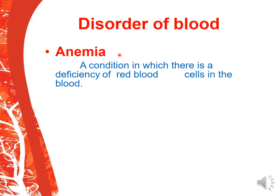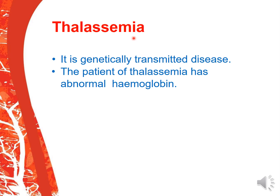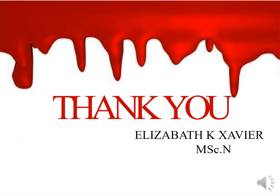Let us see a few disorders of blood. First is anemia — a condition in which there is a deficiency of RBC. Second is leukemia — uncontrolled production of WBC, also called blood cancer. The third condition is thalassemia, which is a genetically transmitted disease in which the patient has abnormal hemoglobin. That is a brief overview of the structure of blood.